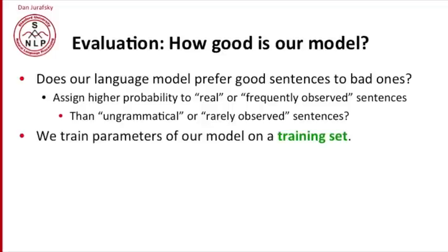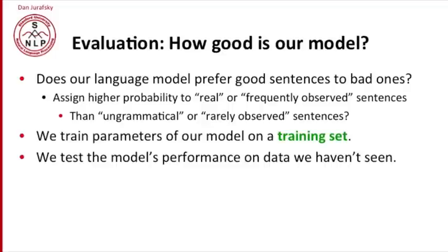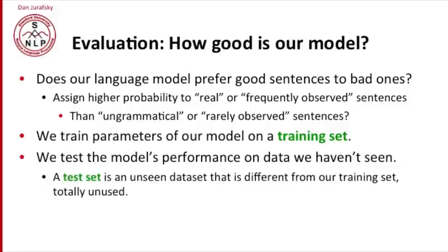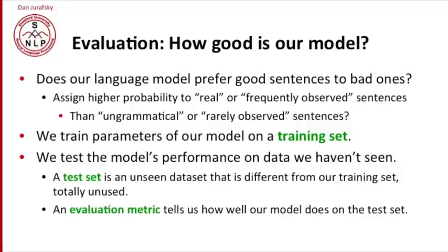We train the parameters of a language model on a training set, and we test the model's performance on data we haven't seen. So we have some training data and some unseen data. This unseen data is called a test set — we want it to be totally unused, something we've never looked at before. That will be a fair evaluation of our model. We'll need an evaluation metric that tells us how well the model does on this unseen test set.